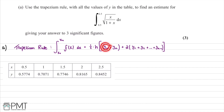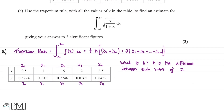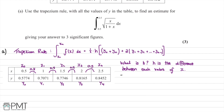Looking at our table, we identify x₀, x₁, x₂, x₃, and x₄, with corresponding y₀ through y₄, so n = 4. The value of h is the difference between each x value. Going from 0.5 to 1, 1 to 1.5, 1.5 to 2, and 2 to 2.5, each step is 0.5, so h = 0.5.